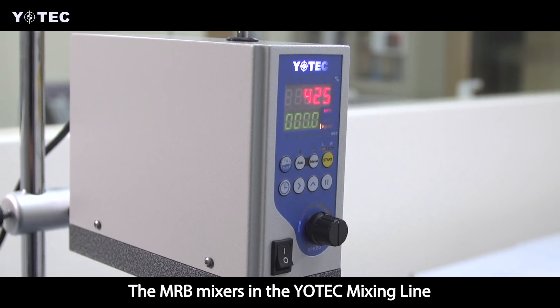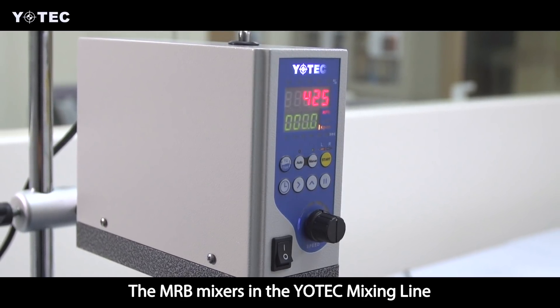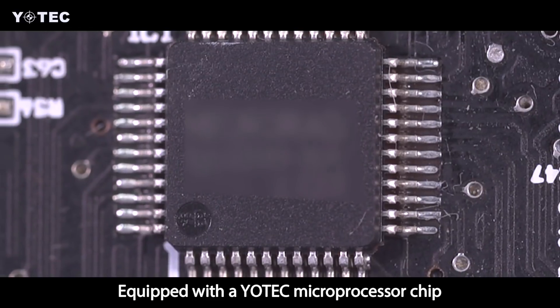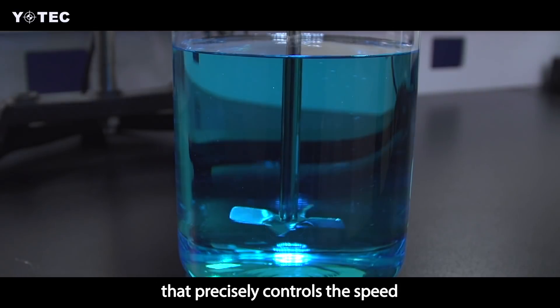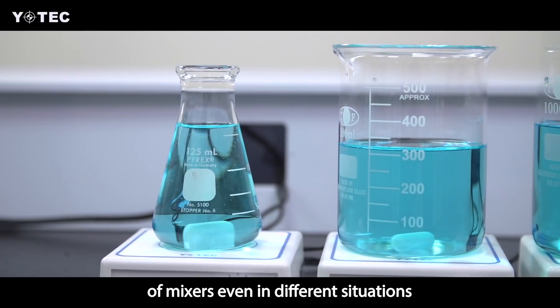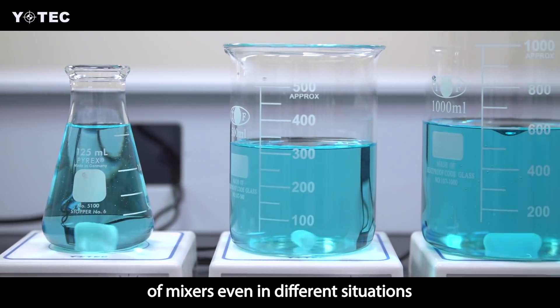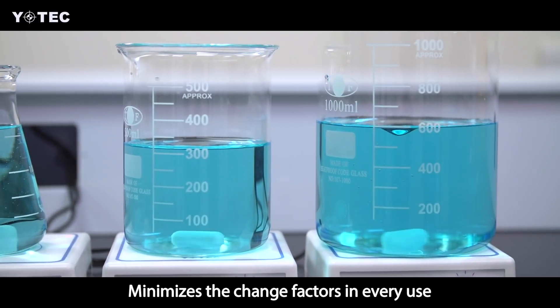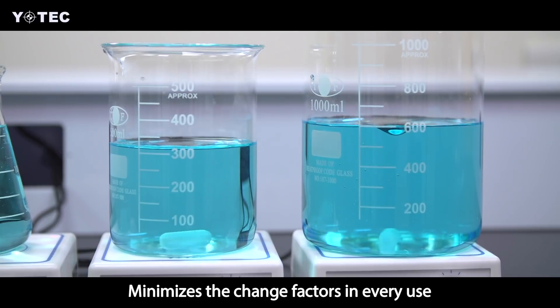The MRB mixers in the Yotek mixing line are equipped with a Yotek microprocessor chip that precisely controls the speed of mixers even in different situations, minimizing the change factors in every use.